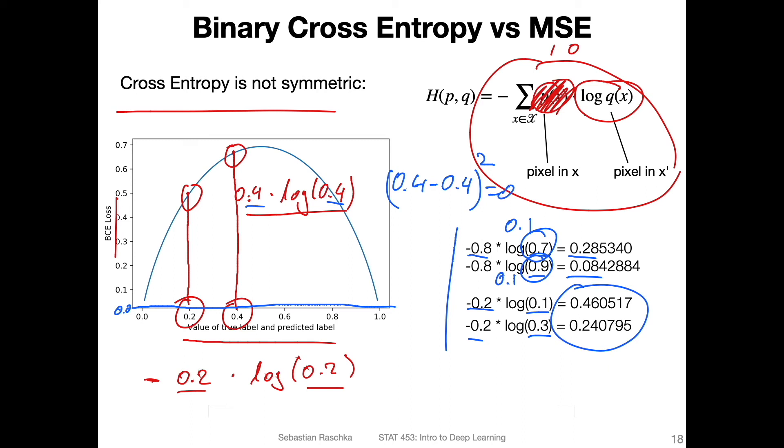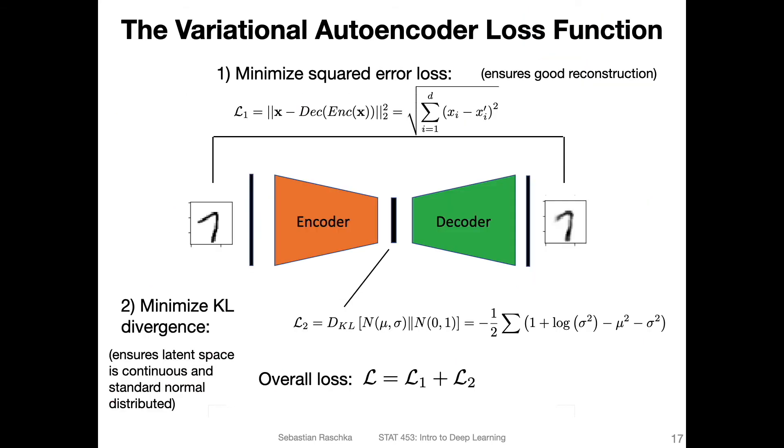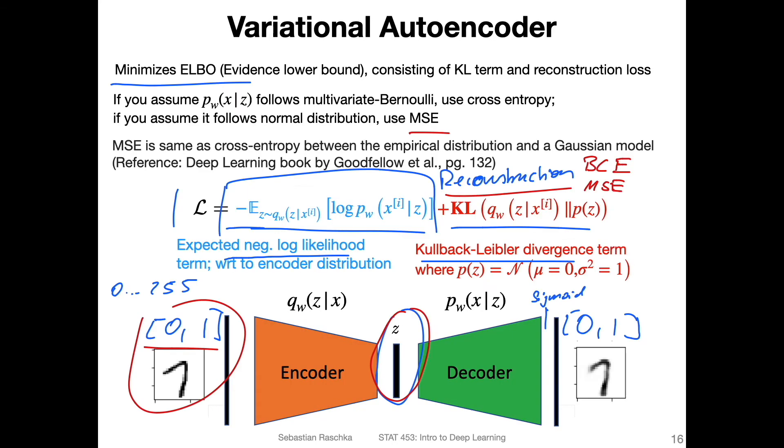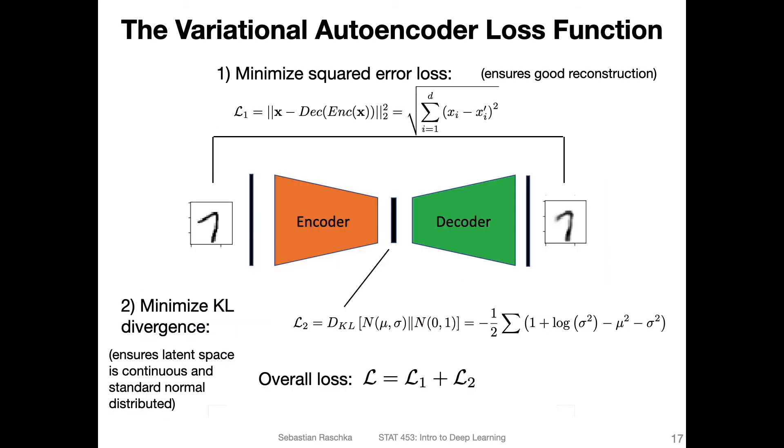Yeah, this is why I would suggest for the variational autoencoder, if you have input pixels between zero and one, or between minus one and one, doesn't matter, if you have input pixels on a continuous range, I would suggest using the MSE instead of the binary cross entropy for the reconstruction term. Alright, so this was now the first term. So if I go back one more slide, this was the first term that we discussed, the reconstruction loss. So I suggest using the mean squared error for that.